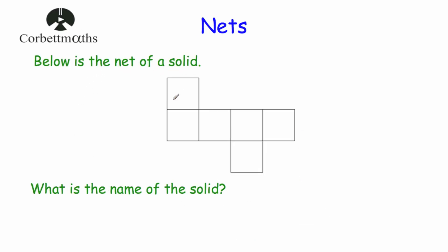Next question: below is the net of a solid — what is the name of the solid? This net consists of six squares, so it's the net of a cube. There are different versions of the net of a cube. We've got our face on the bottom, this square folds up to be the front, these two squares fold up to be the left and right hand faces, one then folds over to be the top, and the last square folds around to be the face on the back of the cube.